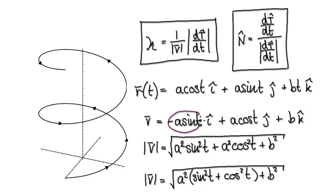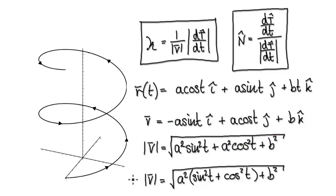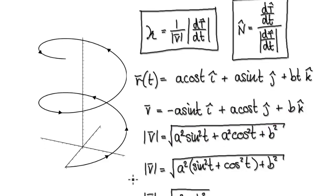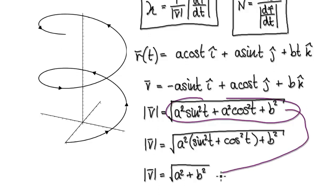Square the first component, that gives you this. Square the second, square the third, and then take the square root of the whole thing. That gives you the magnitude in 3D space. Tidy this up and that gives you the magnitude expression. So now we've got our magnitude and we've got our v.